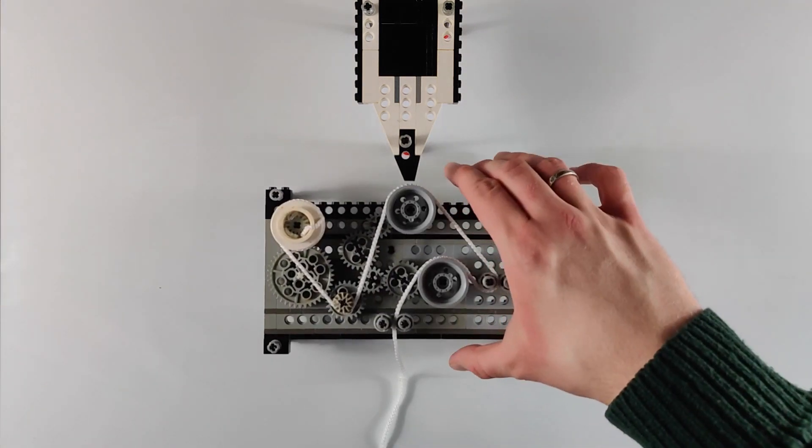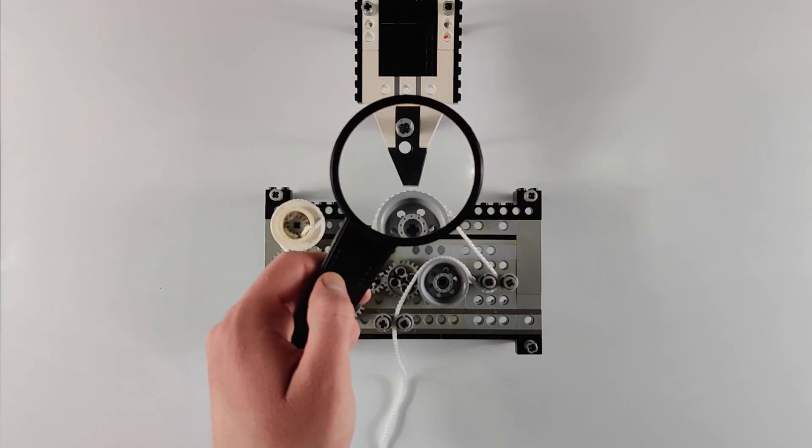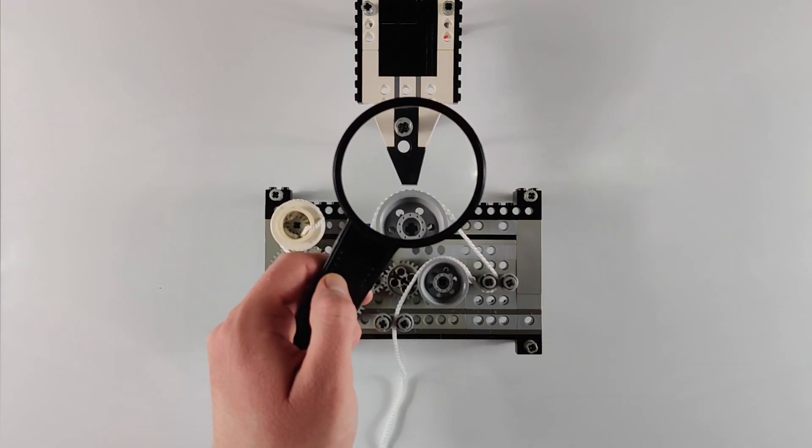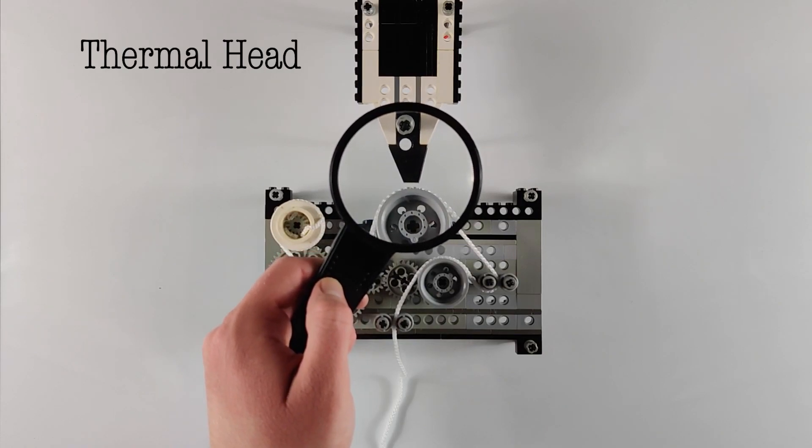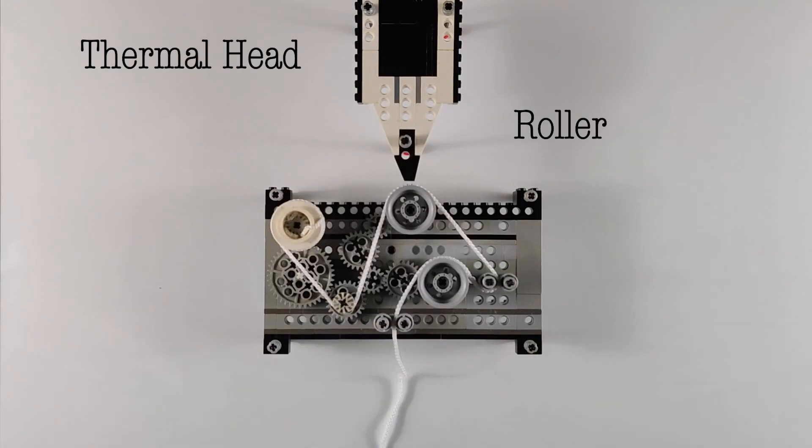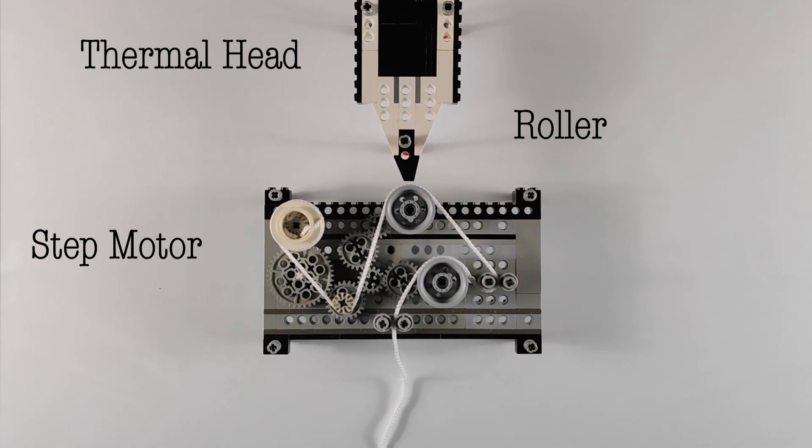Let's start with the structure of a thermal printer. In simple terms it's made up of a thermal head with tiny needles and a roller controlled by a precise engine which moves the paper to place it below the head.